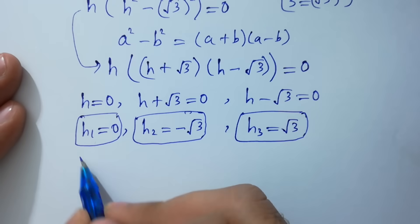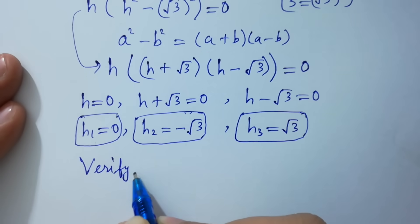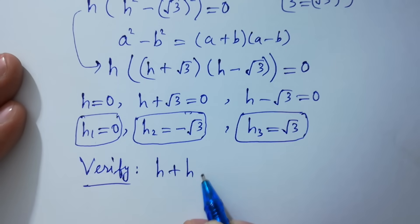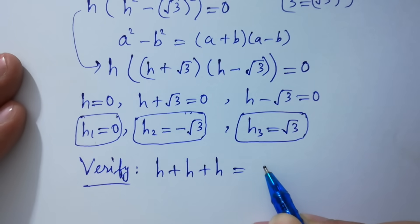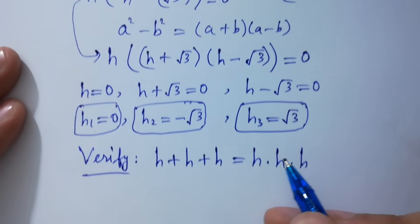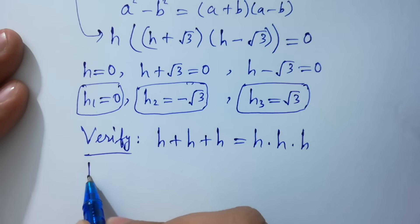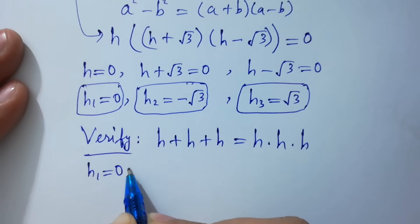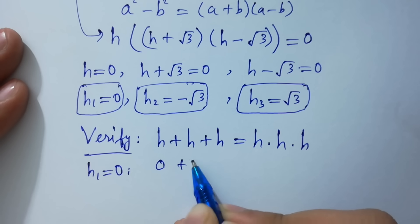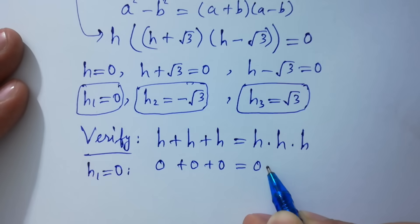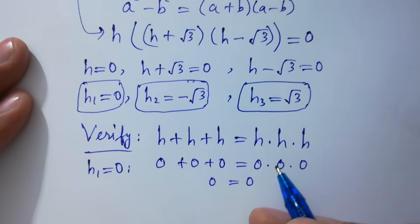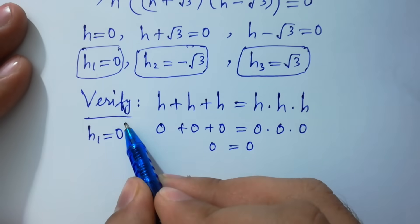Now verify. We have h plus h plus h equal to h times h times h. First, put the value of h which is 0: we have 0 plus 0 plus 0 equal to 0 times 0 times 0, giving 0 equal to 0. This shows that h₁ equal to 0 is correct.